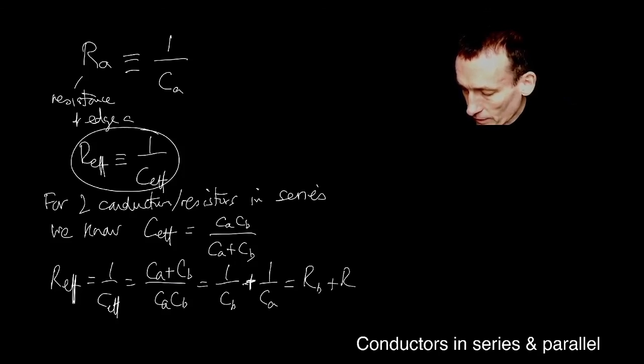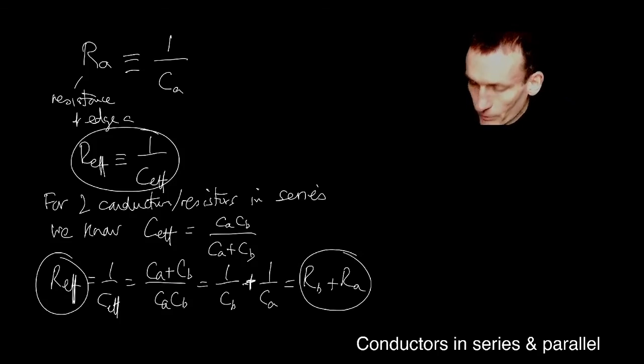So this says the rule that you might have seen before in high school physics. That if you've got two resistors in series, you just add up the individual resistances to get the effective resistance of these two resistors in series.